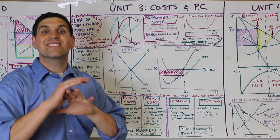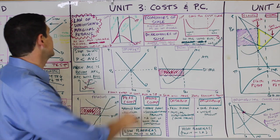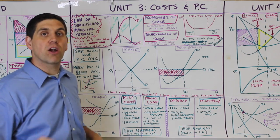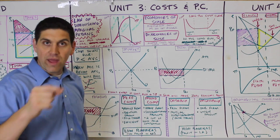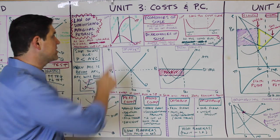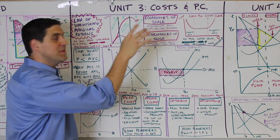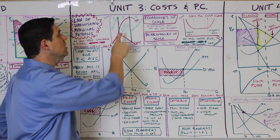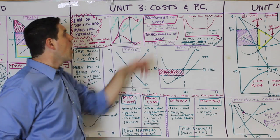Now in Unit 3, things got complicated — we started talking about different types of costs. The first concept is the law of diminishing marginal returns. As you hire more workers or a variable resource with only a fixed number of fixed resources, the additional output will eventually fall. Marginal product goes up, then goes down, then goes negative. That means total product goes up at an increasing rate because of specialization, then at a decreasing rate because of fixed resources, and eventually starts to fall.